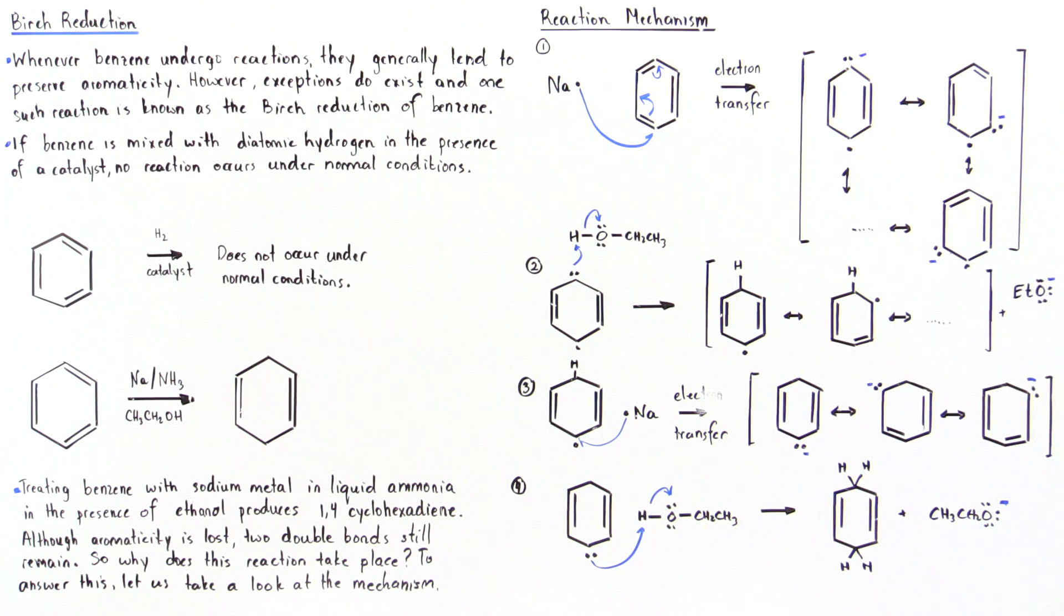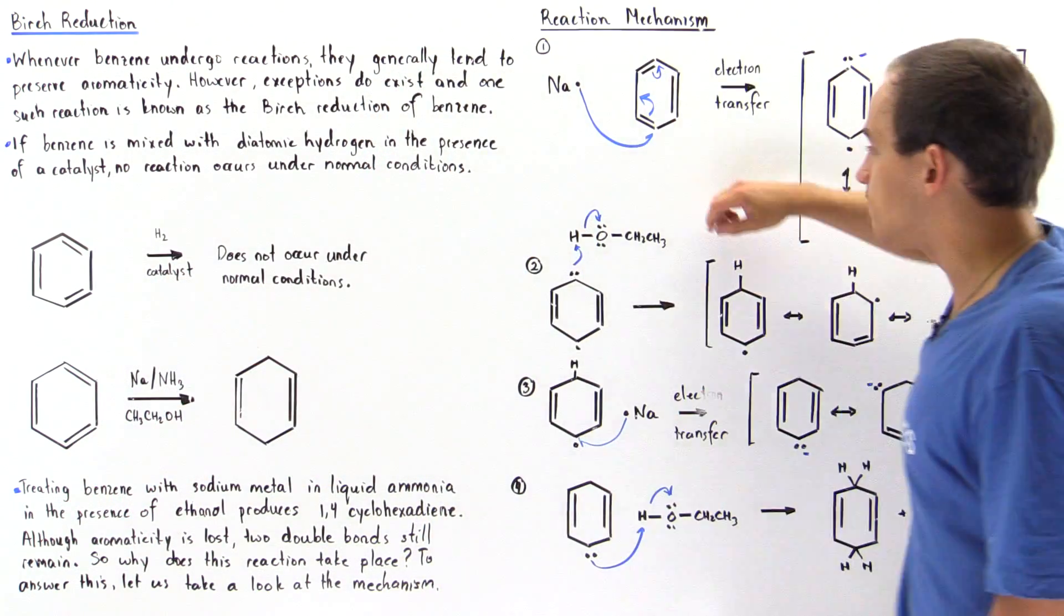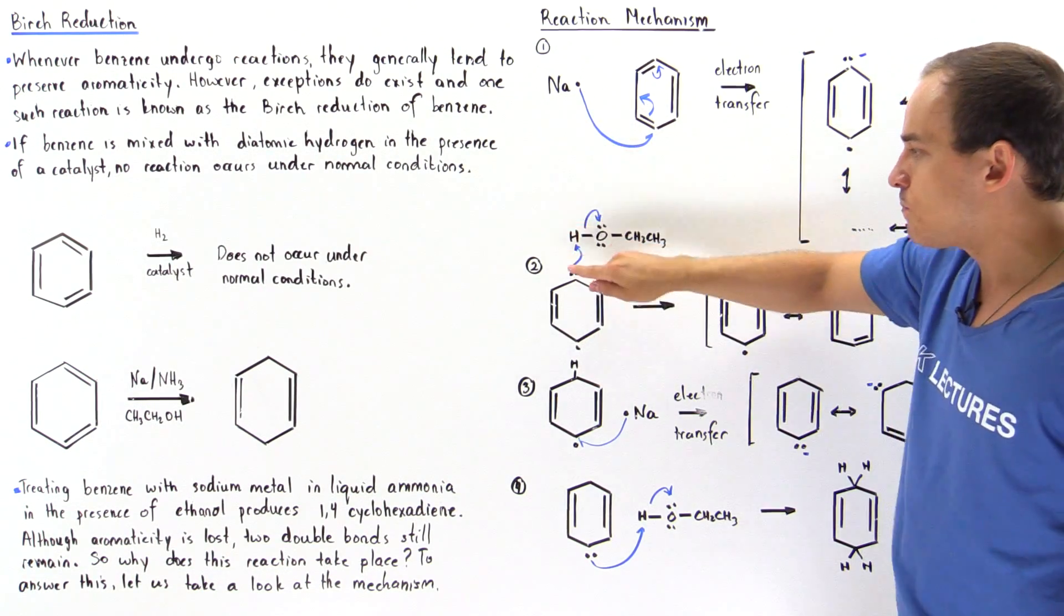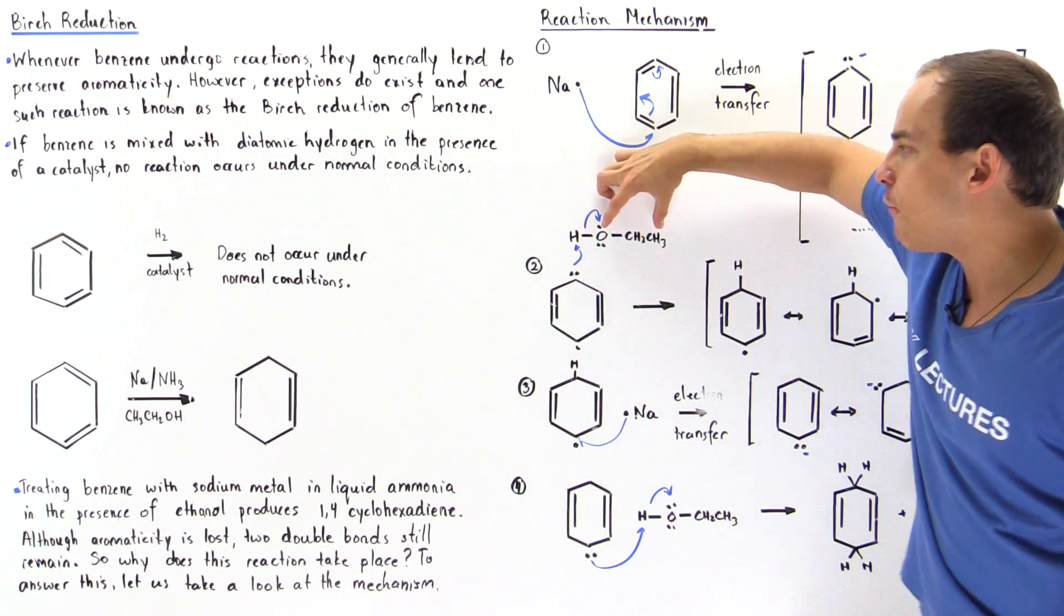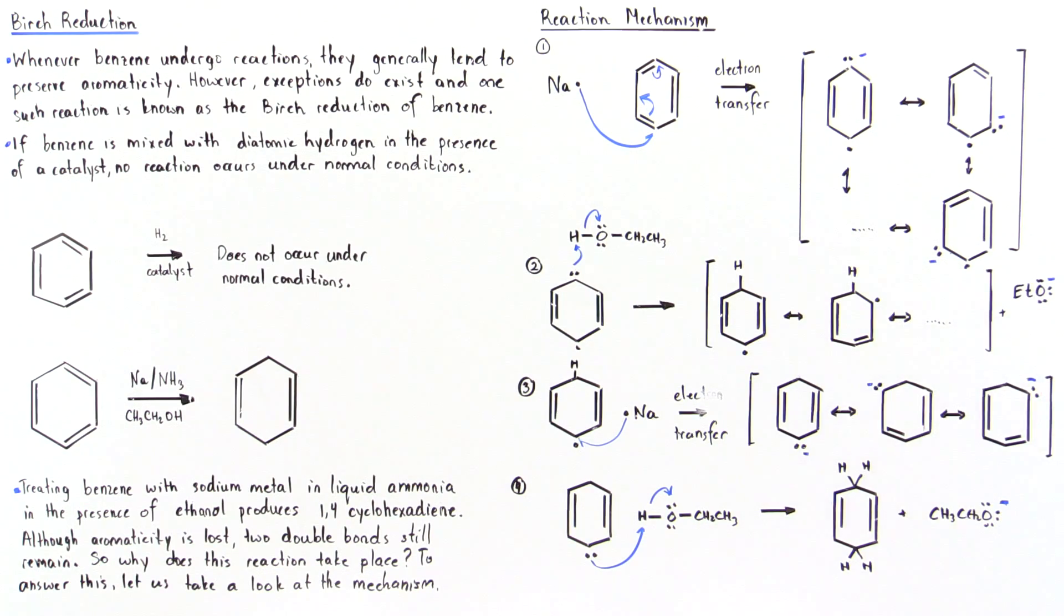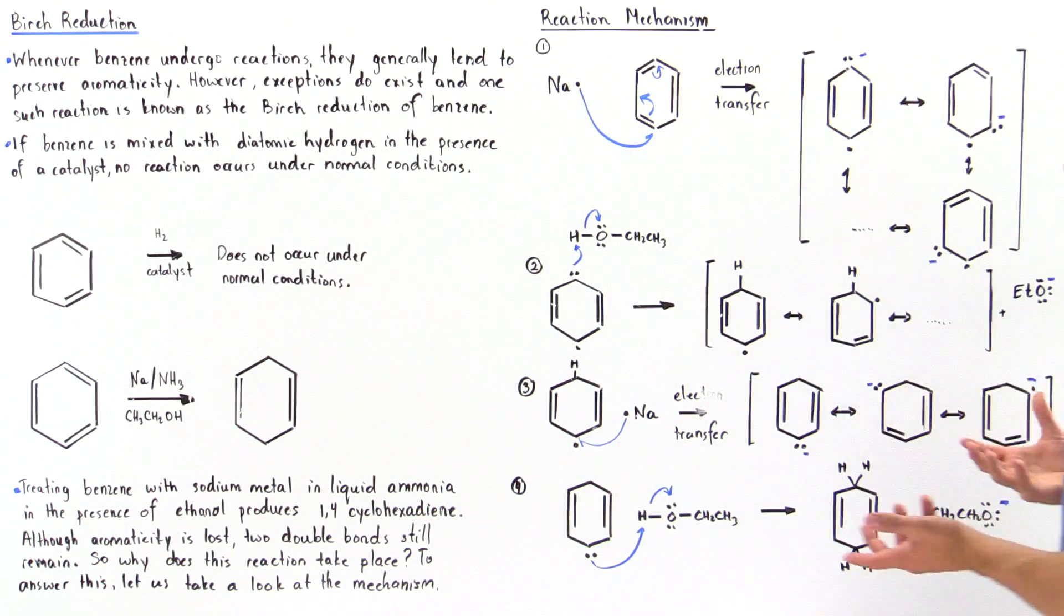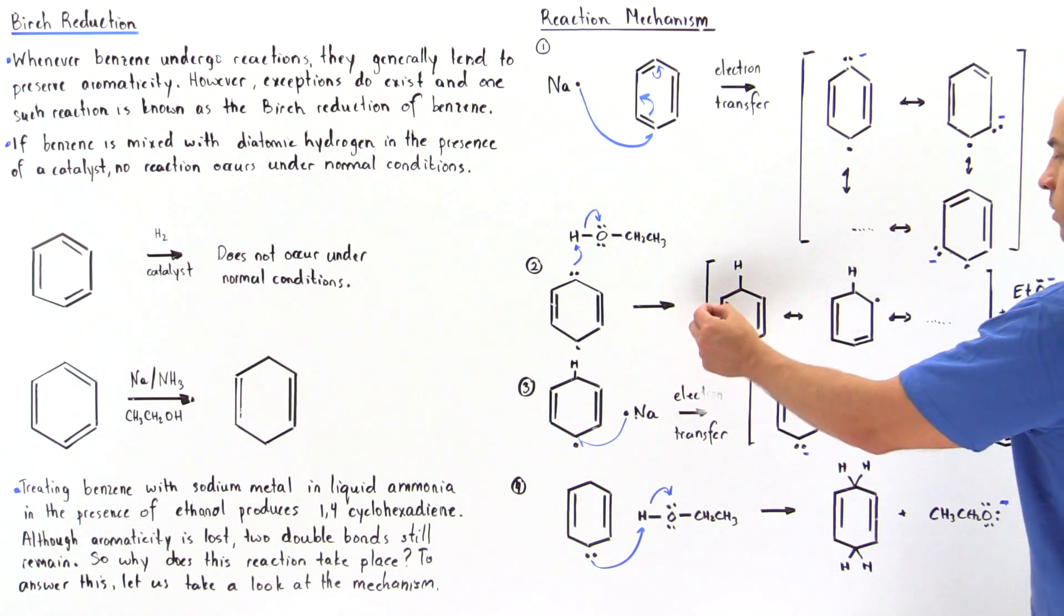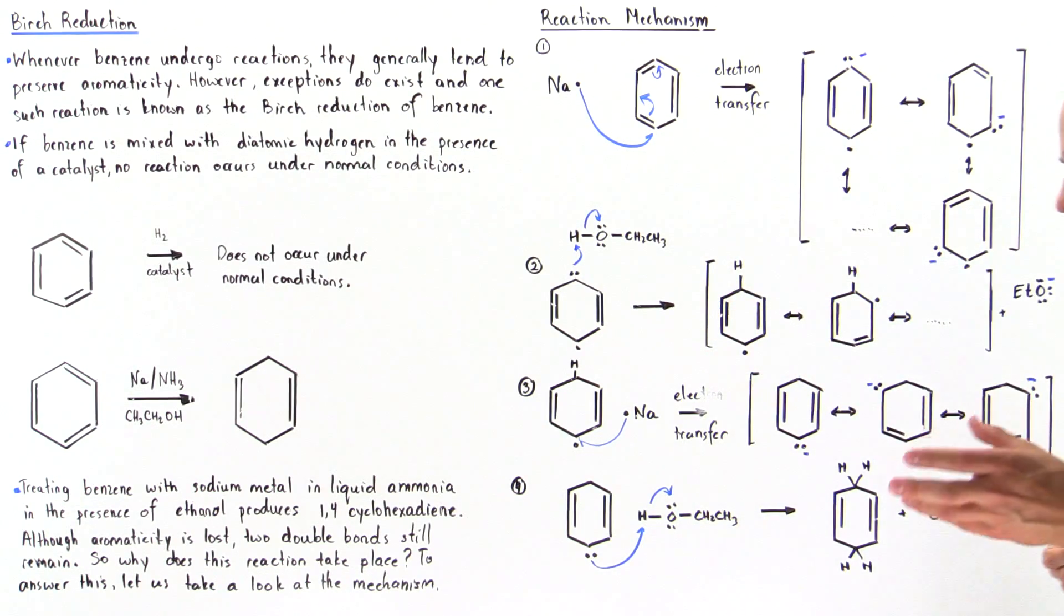In the second step of that reaction, we take this intermediate, and in the presence of a little bit of ethanol alcohol, we see that this alcohol can donate this H atom. This lone pair of electrons takes away this H atom, forming the following alkoxide. And we also form, once again, a resonance stabilized intermediate radical, in which this electron is delocalized among the different carbons that exist on this molecule.